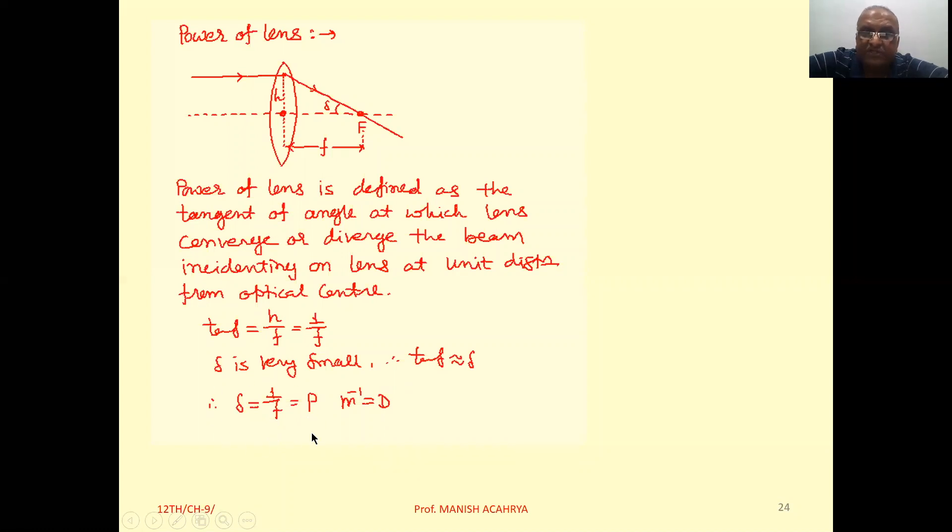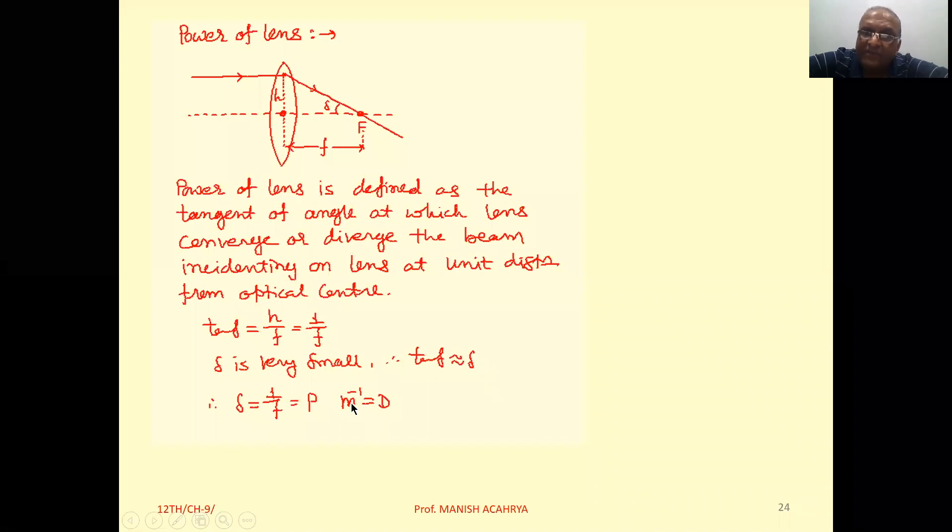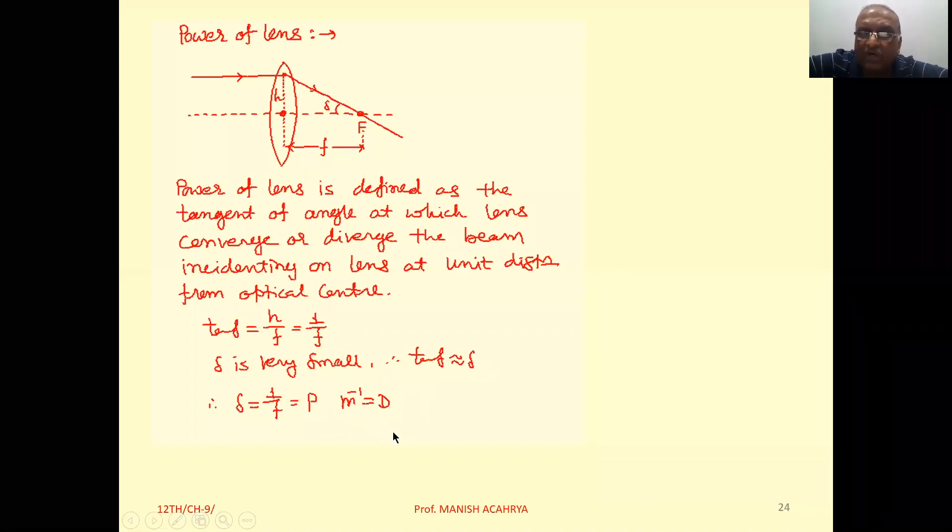And as per definition, this one is called power. So we can write power of lens, P, that is 1 upon f. And here, if we measure the focal length in meter, then the unit of power that is meter inverse. And that meter inverse is called diopter.